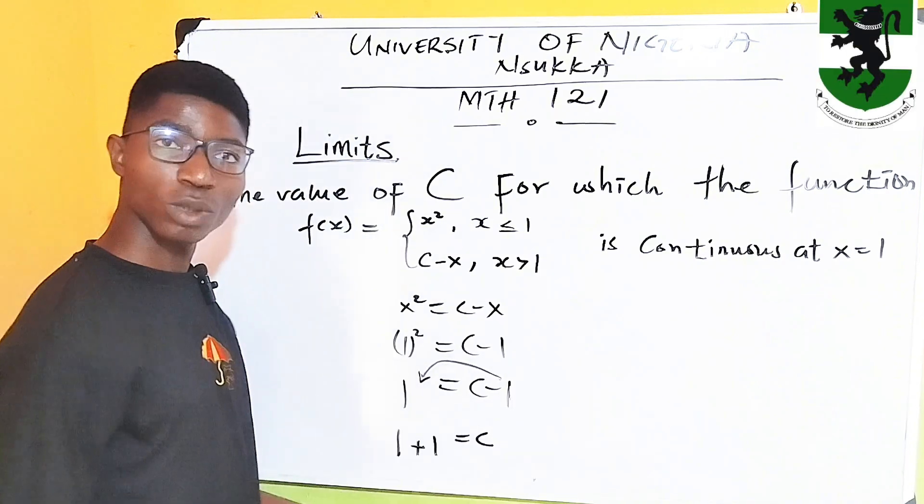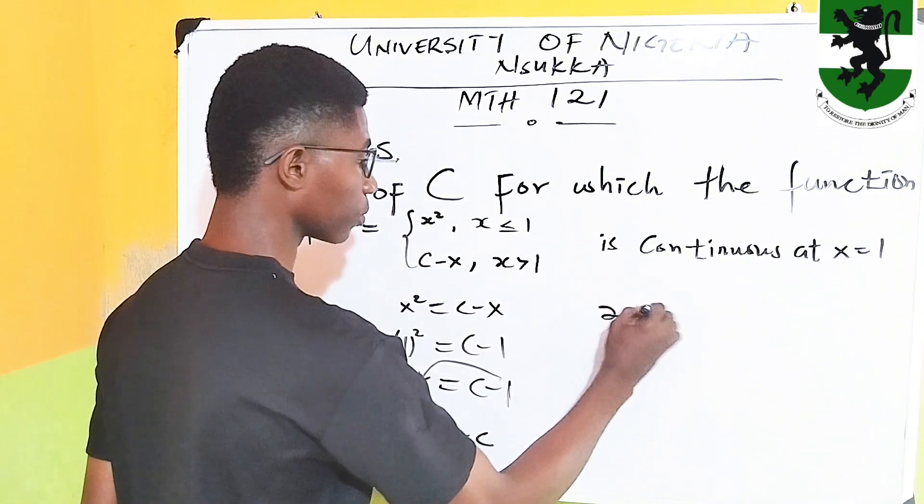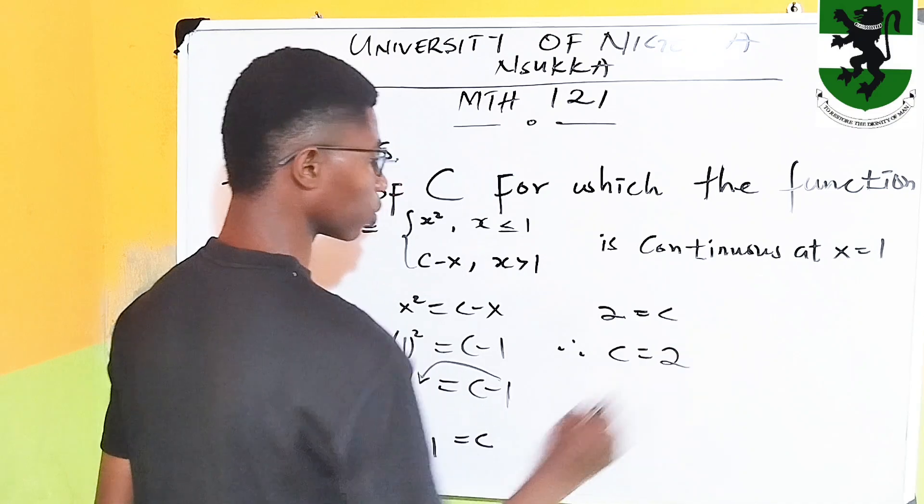So, we have 1 plus 1 is equal to c. And obviously, 1 plus 1 is equal to 2. Therefore, c is equal to 2.